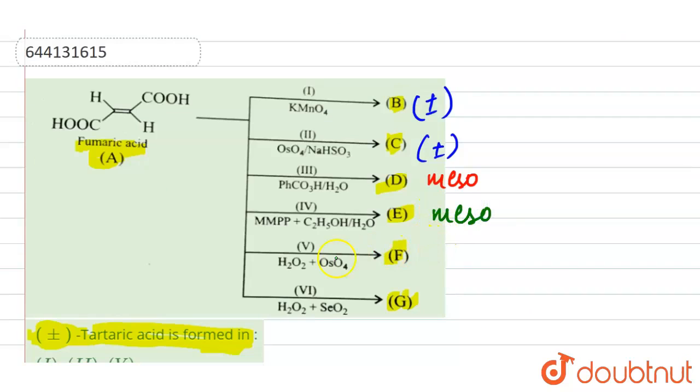Next is H2O2 plus OsO4. Here we have the formation of plus-minus tartaric acid. But when hydrogen peroxide is used with selenium dioxide, then we have the formation of meso.